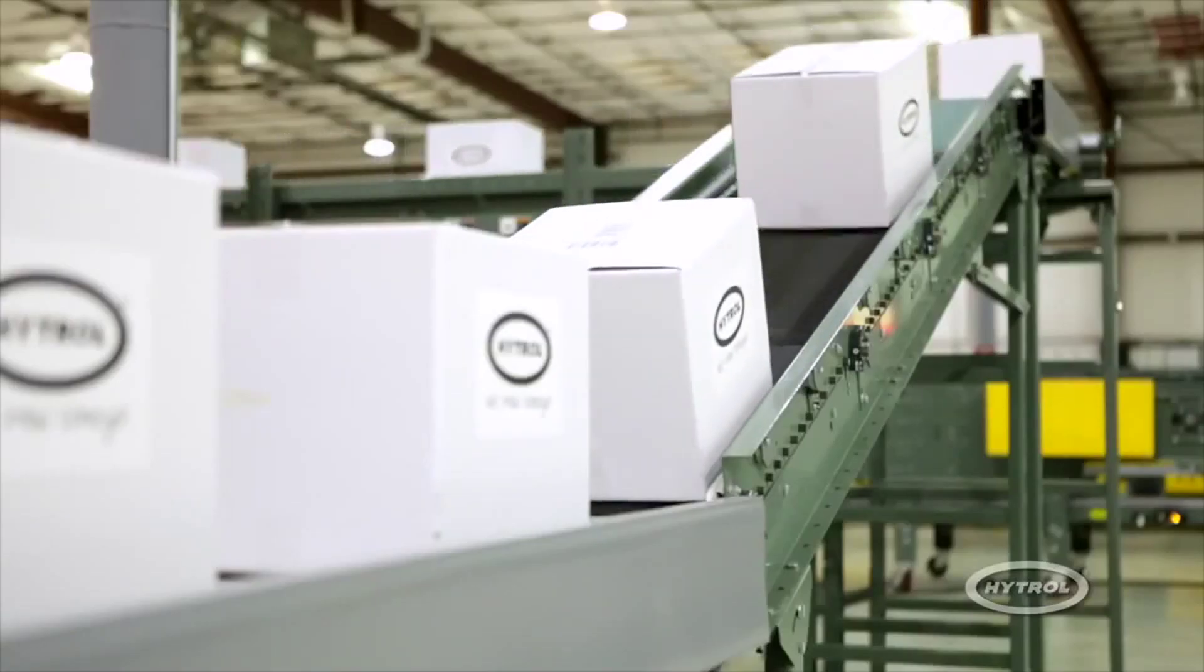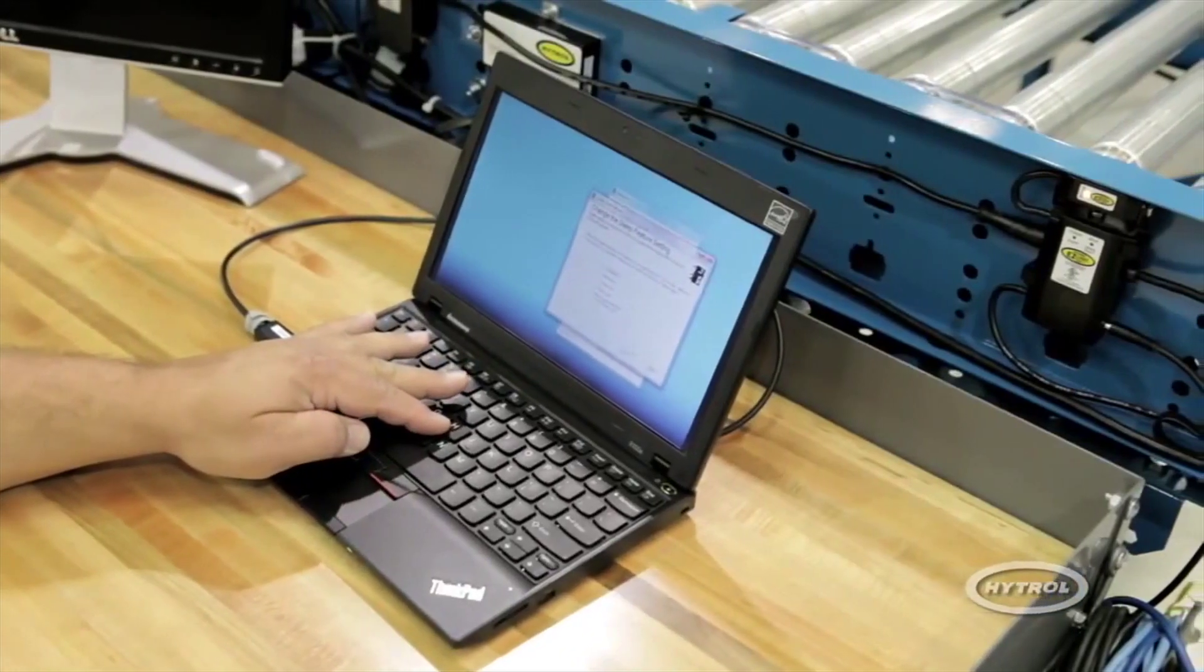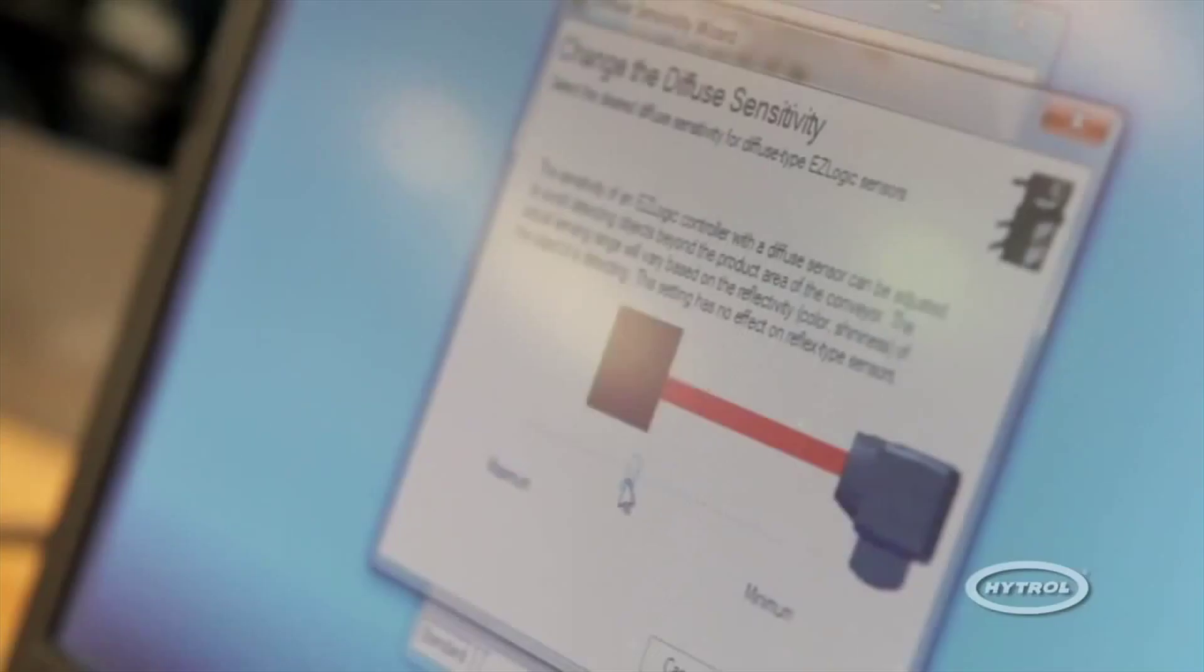EasyLogic comes pre-programmed with the most common settings for your particular model. Hytrol's Genesis configuration software allows you to easily configure each zone controller to meet the needs of your system. In addition to Genesis, Hytrol also offers a push-button programmer.